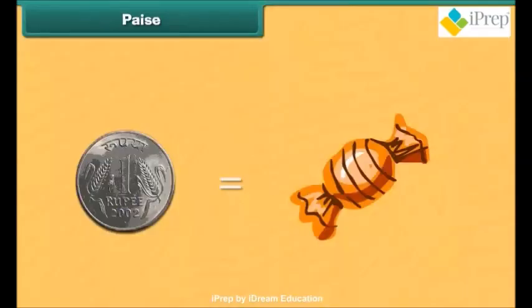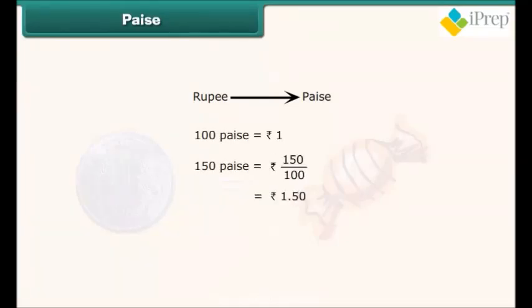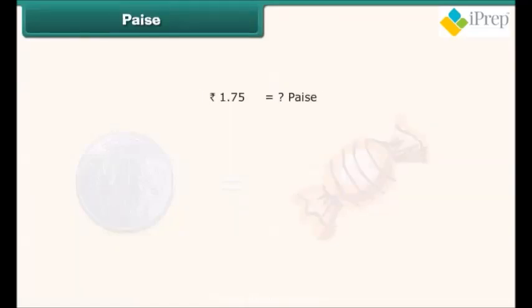Rahul purchased one toffee for 1 rupee. How will you convert this rupee into paise? 100 paise makes 1 rupee. Thus, 150 paise equals to 150 upon 100 rupees. This makes 1.50 rupees. Thus, when we convert paise to rupees, we divide it by 100. How will you convert 1.75 rupees into paise? Multiplying 1.75 with 100, we get 175 paise.